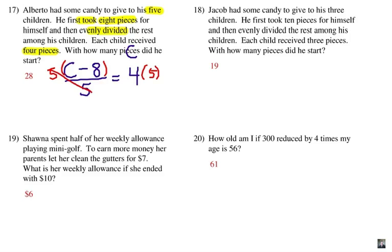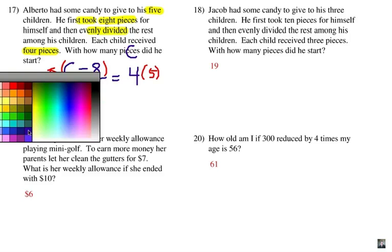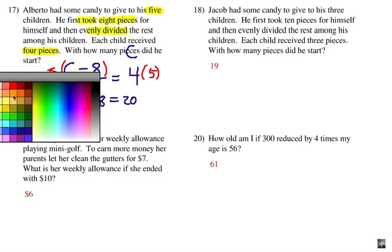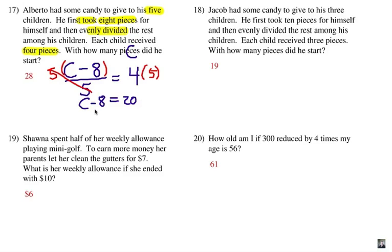And of course, those fives there will cancel out and we're going to go to C minus eight is 20. And then, of course, we've got to add eight to each side and that will give us our answer of 28. Alright, 28. Obviously, you saw the answer ahead of time there. Alright, I hope you did okay.